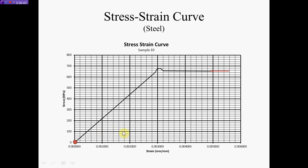Using the 0.2% offset method, we have to find that 0.2% on the graph. Taking 0.2% and converting it to a decimal gives 0.002. This point should already be on a major grid line on most stress-strain curves. I'm going to put my first point right there, then I'll take a straight edge or ruler, measure from here to here, go up, measure over the same amount again, draw the parallel line, and that point is my yield point.